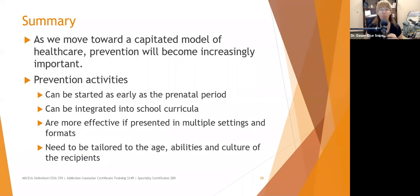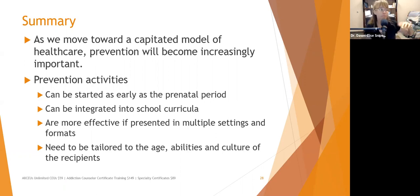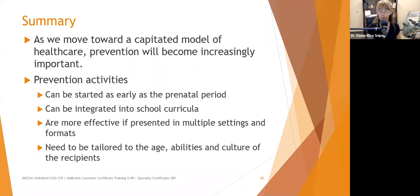As we move toward a capitated model of health care, prevention will become increasingly important. Capitation means you are given X number of dollars — say $10 — for every life you are responsible for insuring. If there are 100,000 people signed up for Medicaid in your county and you are the provider, you get a million dollars but must use that million dollars to provide every ounce of treatment necessary — which means it's really cost-effective to engage in prevention practices. Prevention activities can be started as early as the prenatal period, integrated into school curricula, and are more effective if presented in multiple settings and formats tailored to the age, abilities, and culture of the recipients.